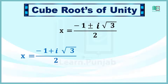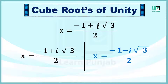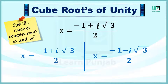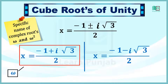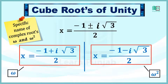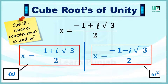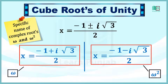इसलिए minus 1 plus iota under root 3 over 2 اور minus 1 minus iota under root 3 over 2 cube roots of unity हैं। यह complex roots का एक खास नाम है जिनको omega और omega square कहते हैं। अगर minus 1 plus iota under root 3 over 2 को omega कहें, तो minus 1 minus iota under root 3 over 2 omega square बन जाएगा।